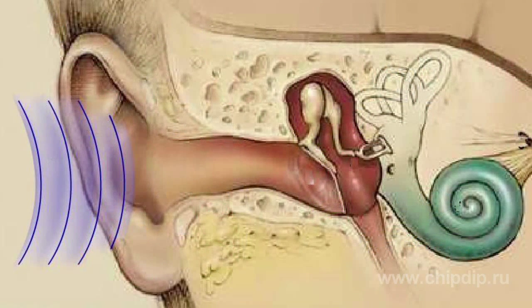Our ears, just like our eyes, are highly sensitive. This sensitivity allows us to hear sounds of really low power. Even at significantly louder sounds, the oscillation amplitudes of our eardrums still remain very small. When we speak at normal loudness without raising our voice, the sounds of our interlocutor's voice cause oscillations of the eardrum with an amplitude of just several microns.